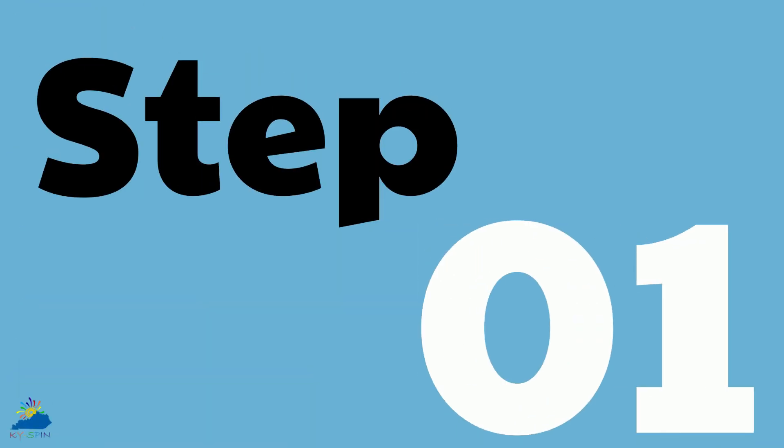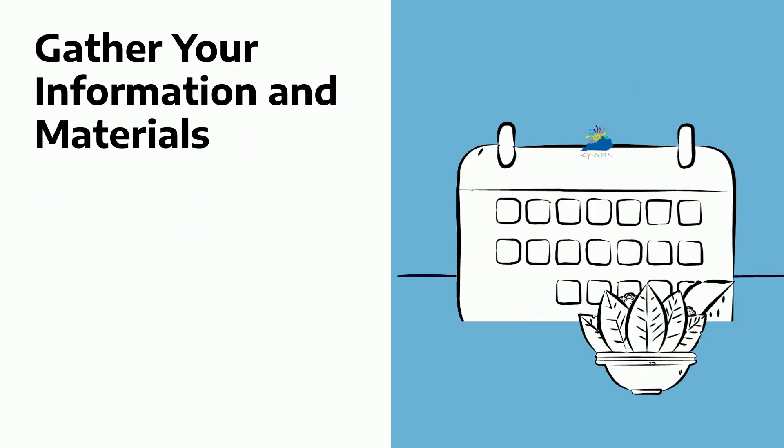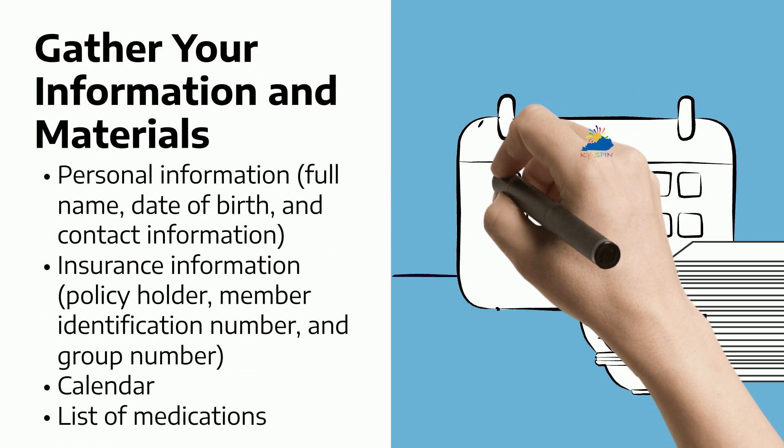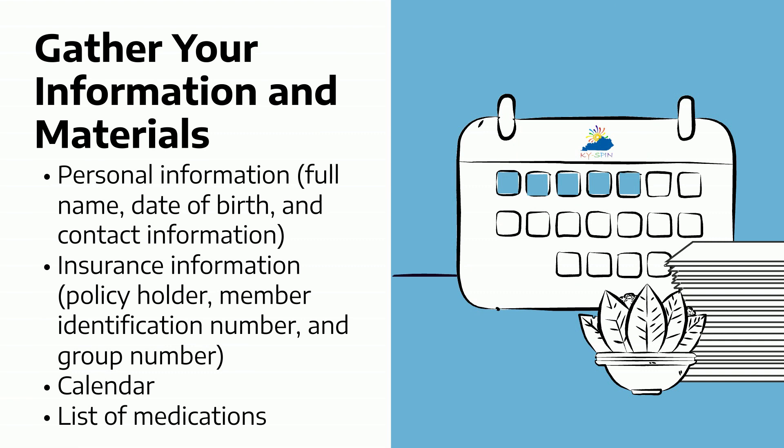Step one: gather your information and materials, such as personal information including your name, date of birth, and contact information. You will also need your insurance information — who your policyholder is, which could be you or potentially your parents — your member identification number located on your card, your group number, a calendar, and a list of medications you may be on.